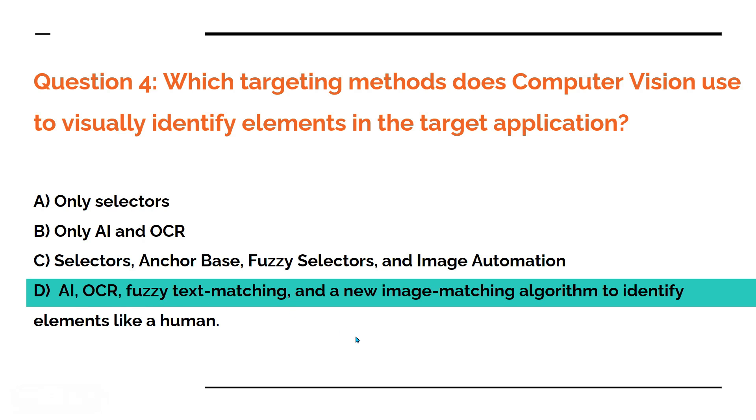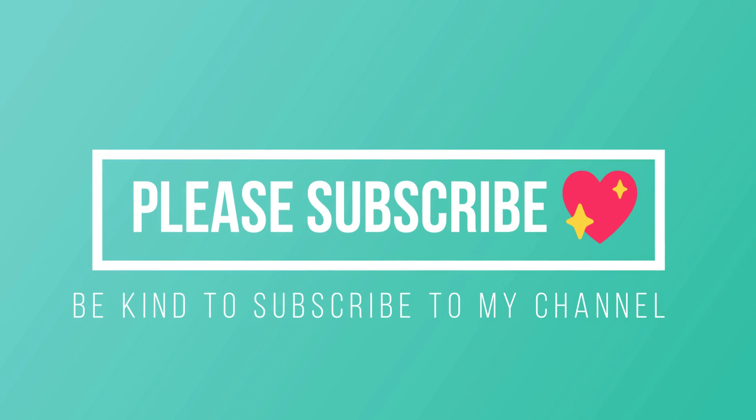The answer is D — AI, OCR, fuzzy text matching, and new image matching algorithm. We have also studied this. Thank you guys for watching. Let's move on to our next topic.